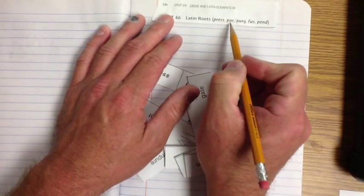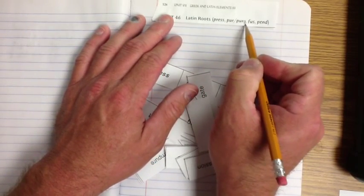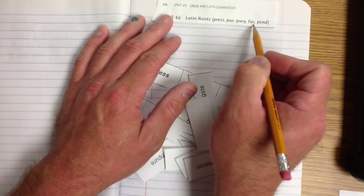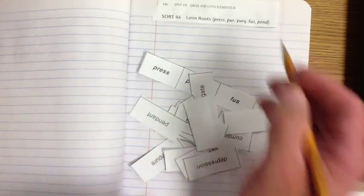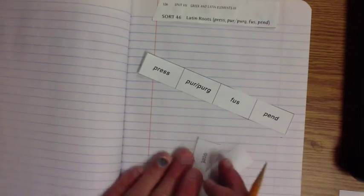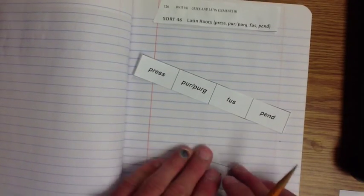So what we're going to be talking about tonight is Latin roots: press, purr, purge, fuzz or fuse, and pend. So now that I've got my words, you know when I'm completely finished with my words, you know I'm going to put them right in my zip-top bag and stick them on the refrigerator in my backpack somewhere where you know that you can get them again and again and again. All right, there they are, except for the ones I'm going to show you tonight.